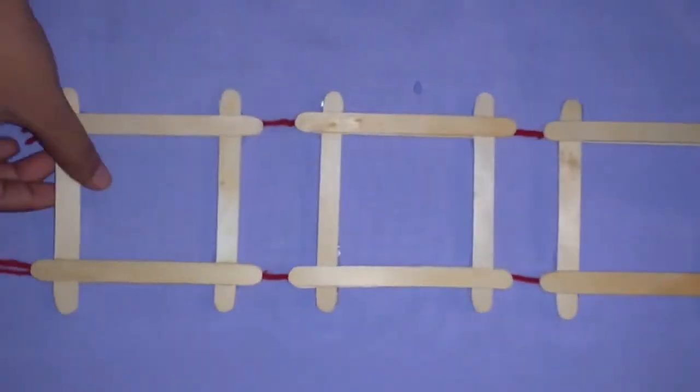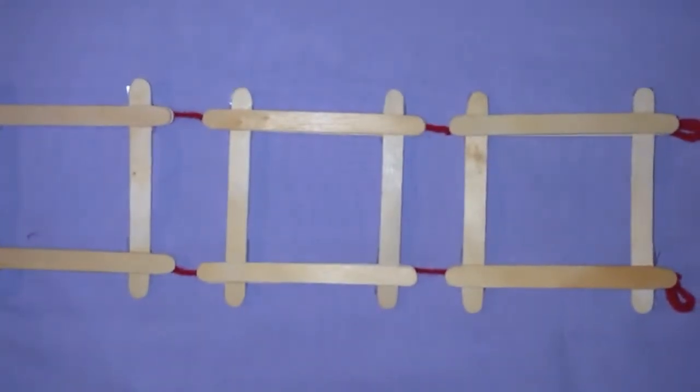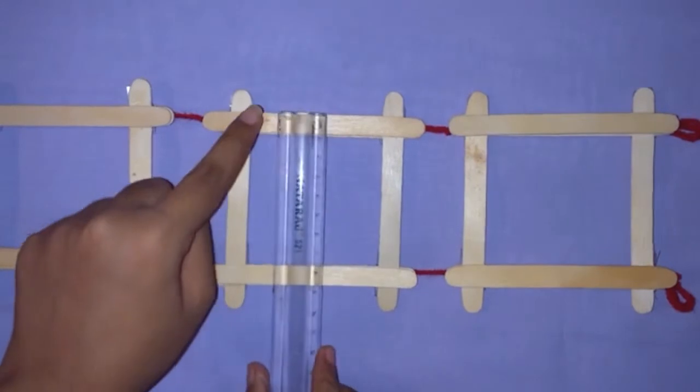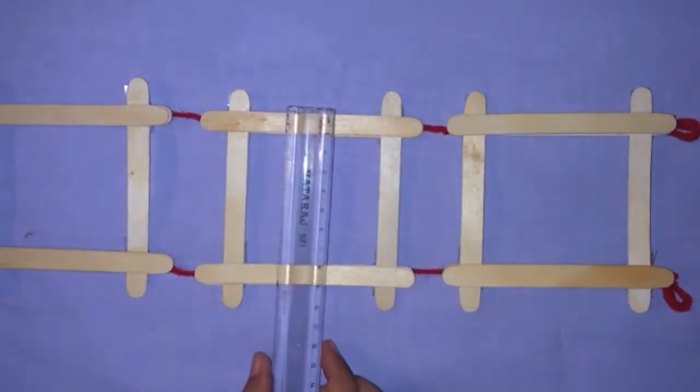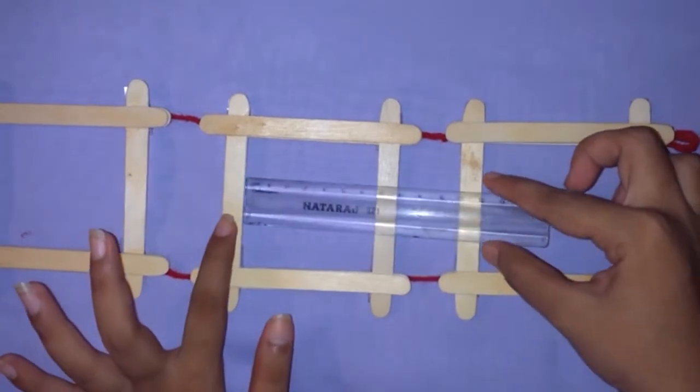Coming to measuring the photo, the width of the photo must be from the end of one candy stick to the end of other candy stick, whereas the height of the photo must be from the inner corner of these two candy sticks.